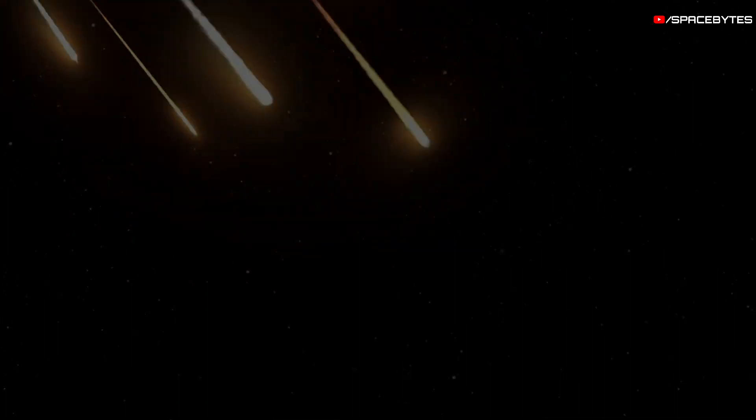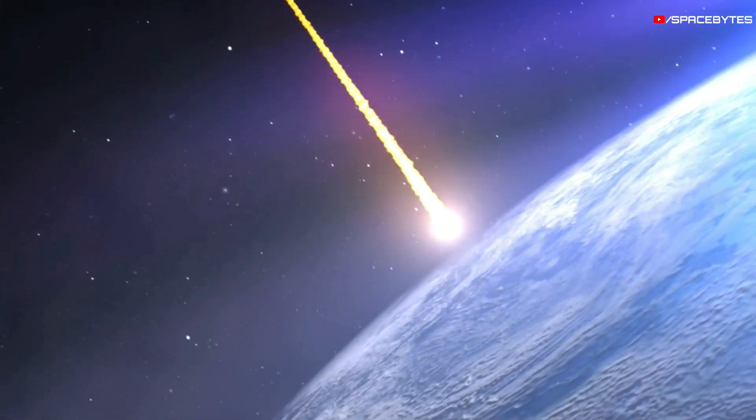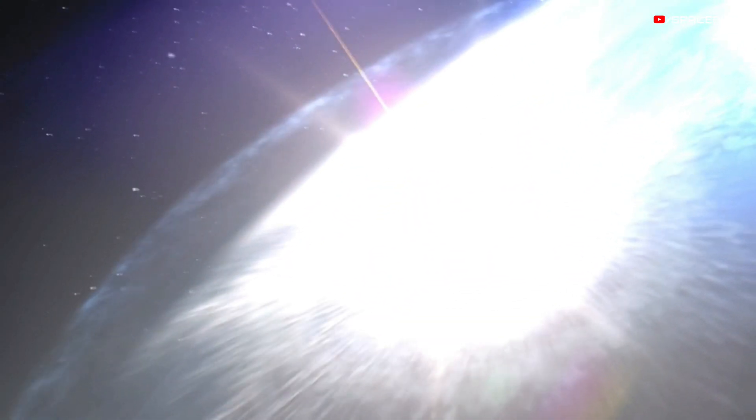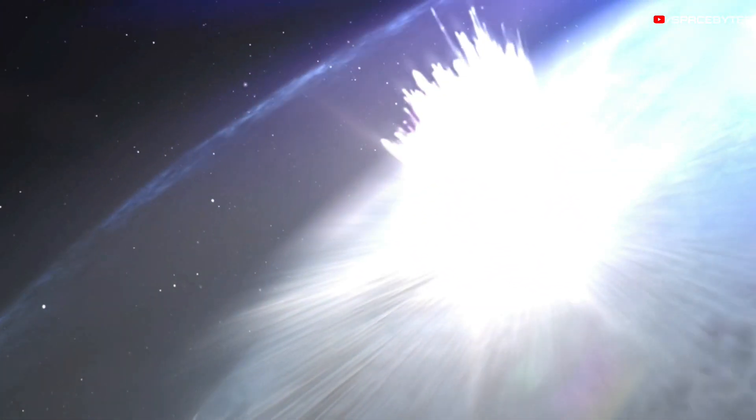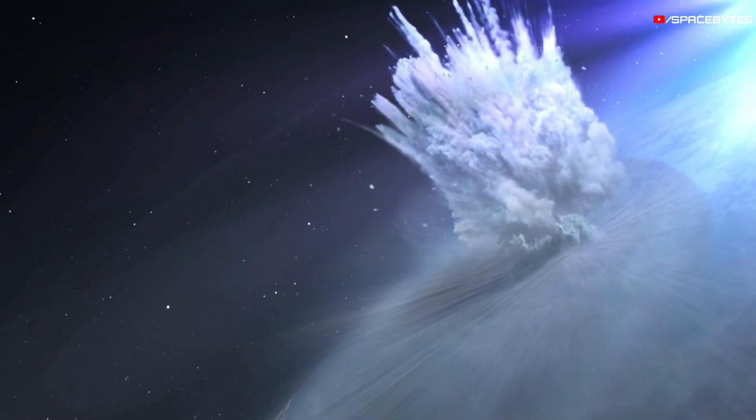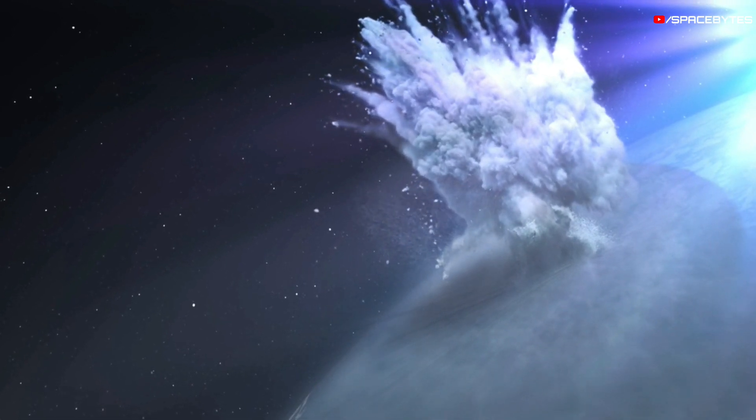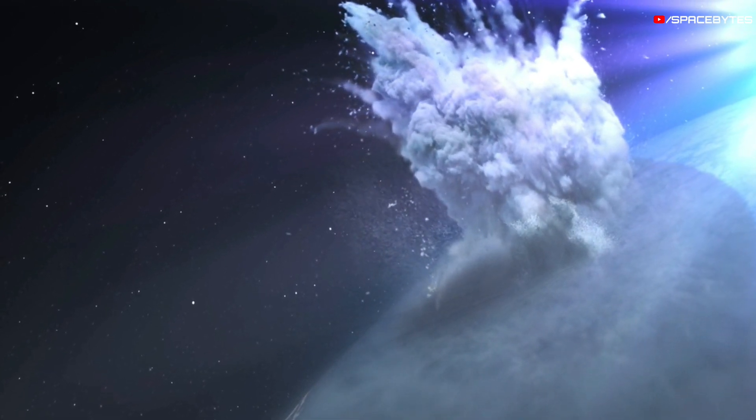NASA maintains a record of the most hazardous asteroids and comets. Some of these objects could hit the Earth in the coming decades or centuries, resulting in another catastrophic event. In this video, you will discover the likelihood of these collisions, the most dangerous asteroids, and the emergency strategies that governments have in place.